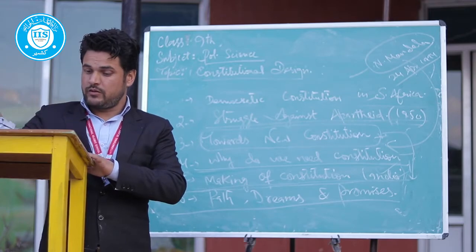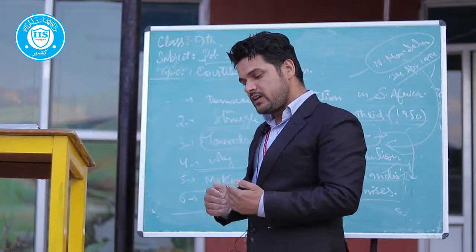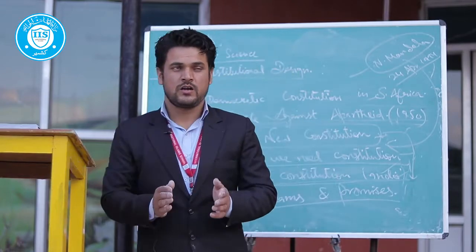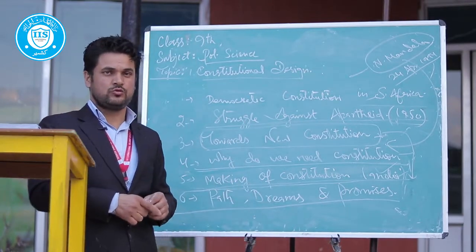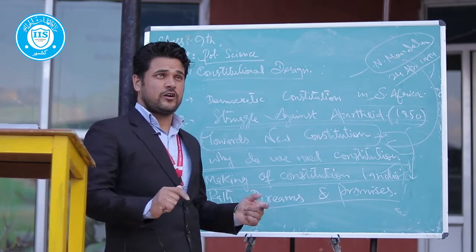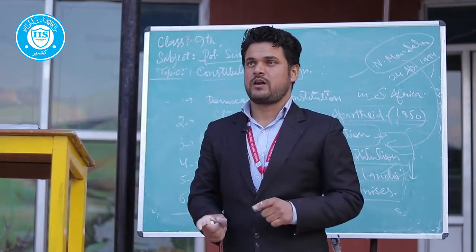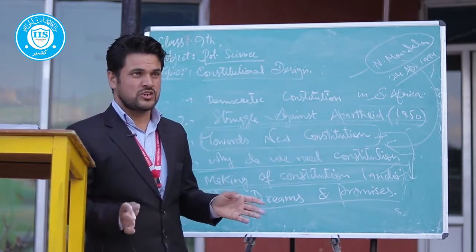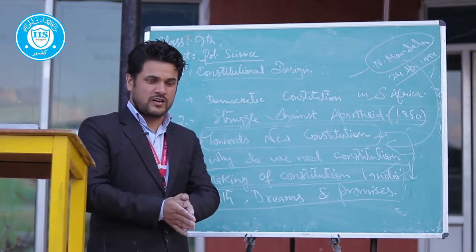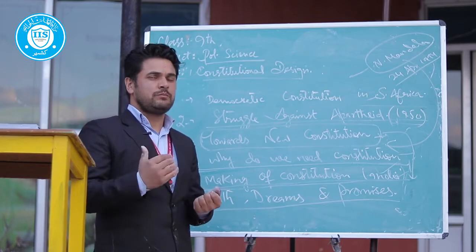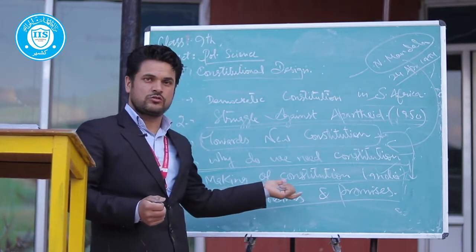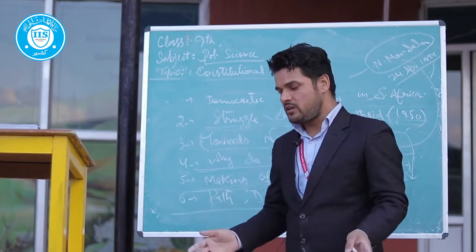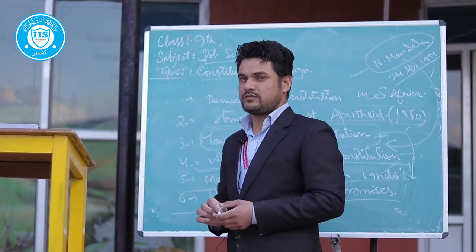1946 mein unhone ek meeting ki. Country jo divide ho rahi thi — two nation theory ke aadhar par partition ho raha tha on the basis of religion, that is Muslim and Hindus. But still, India ne 1947 mein azadi ke baad a secular democratic structure of government adopt kiya, while Pakistan ne Islamic democratic structure apnaya. India, kyunki ismein diversity bahut hai aur yeh huge country thi, inhone holding-together federation banai jisme saari states ko ikathe rakhna tha aur central power ko dominant power banaya gaya. Isliye unke liye ek drafting committee banana aur us constitution ko saari diversity cover karne ke liye tayyar karna bahut difficult tha.